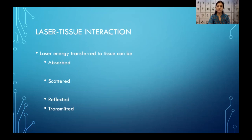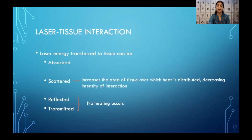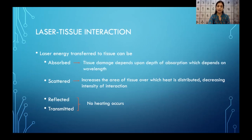Whatever laser energy is transferred to the tissue will either get reflected, transmitted, scattered, or absorbed. If the energy gets reflected or transmitted, there will be no effect on the target tissue. Scattering means the area of tissue interacting with the laser energy will be larger. Whatever energy is absorbed is what causes the ablative or cutting effect, as well as the undesired effect of tissue damage.